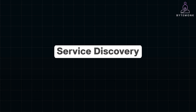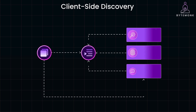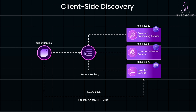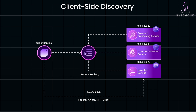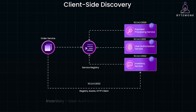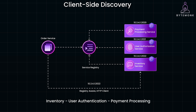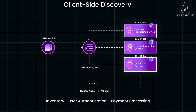Service discovery operates in two main ways: client-side discovery and server-side discovery. In client-side discovery, the client is responsible for determining the service locations — it queries a service registry and uses the information to connect to the appropriate service. Imagine you are running an e-commerce platform with separate services for inventory, user authentication, and payment processing. When a customer places an order, the order service needs to communicate with both the inventory service to check stock and the payment service to process the payment.